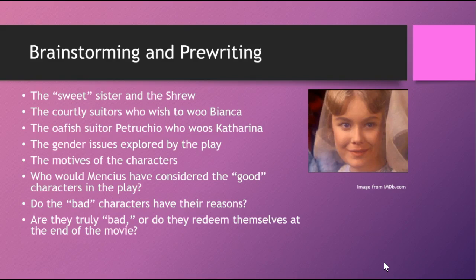Here is some of the brainstorming I did. In The Taming of the Shrew we have the sweet sister — this is an image from the Internet Movie Database website, and she is portrayed in some scenes as angelic and beautiful. A shrew is a small animal with a high metabolism and a crabby demeanor, kind of like a mouse but doesn't act like one. So we have the sweet sister and the shrew, the older sister. Then we have courtly suitors — handsome young men who wish to woo Bianca and try to get her to marry one of them.